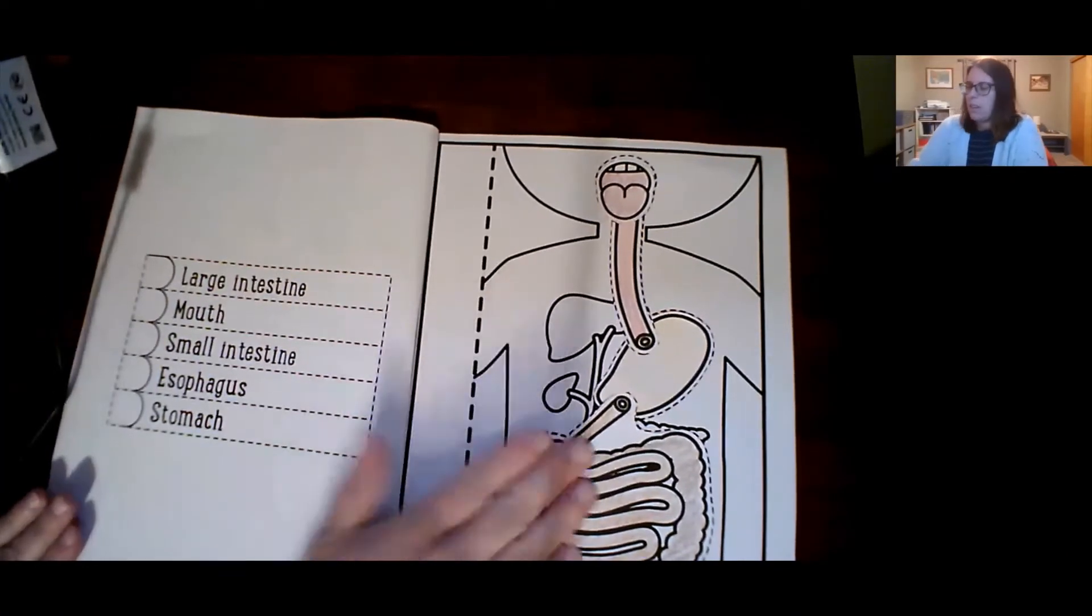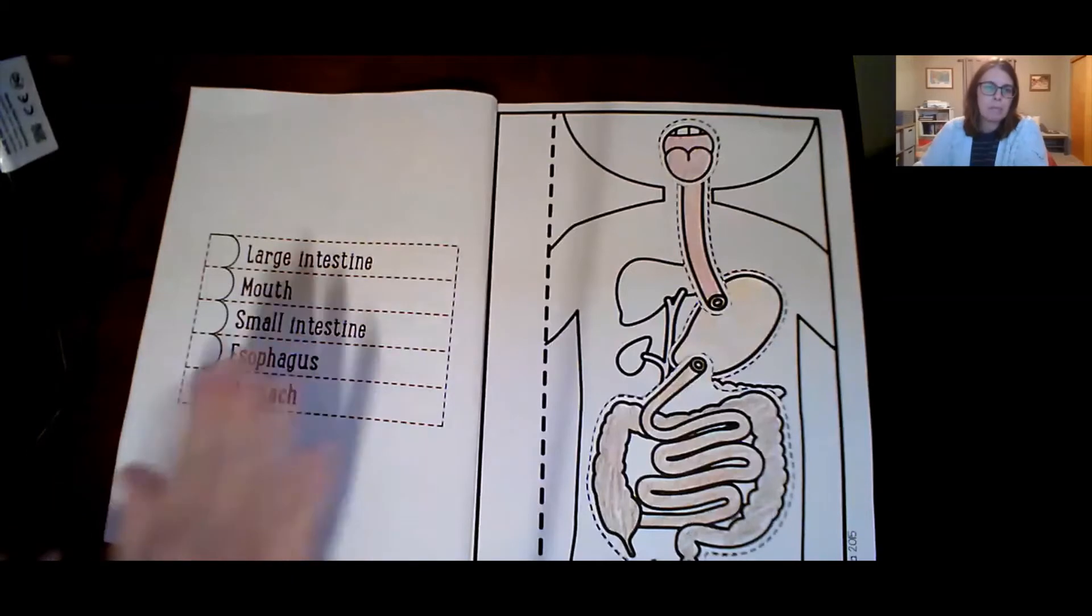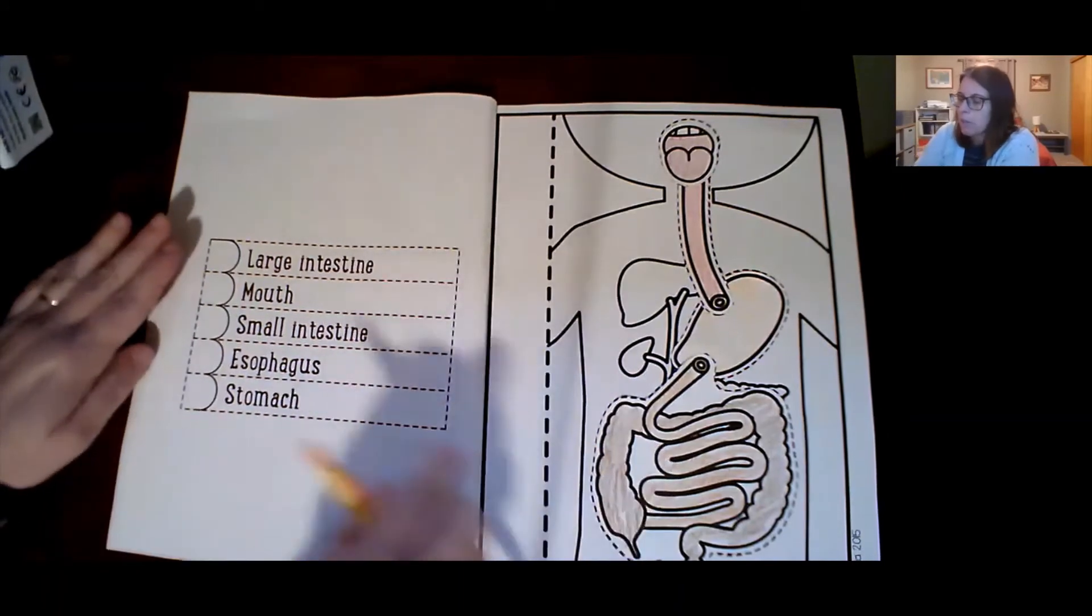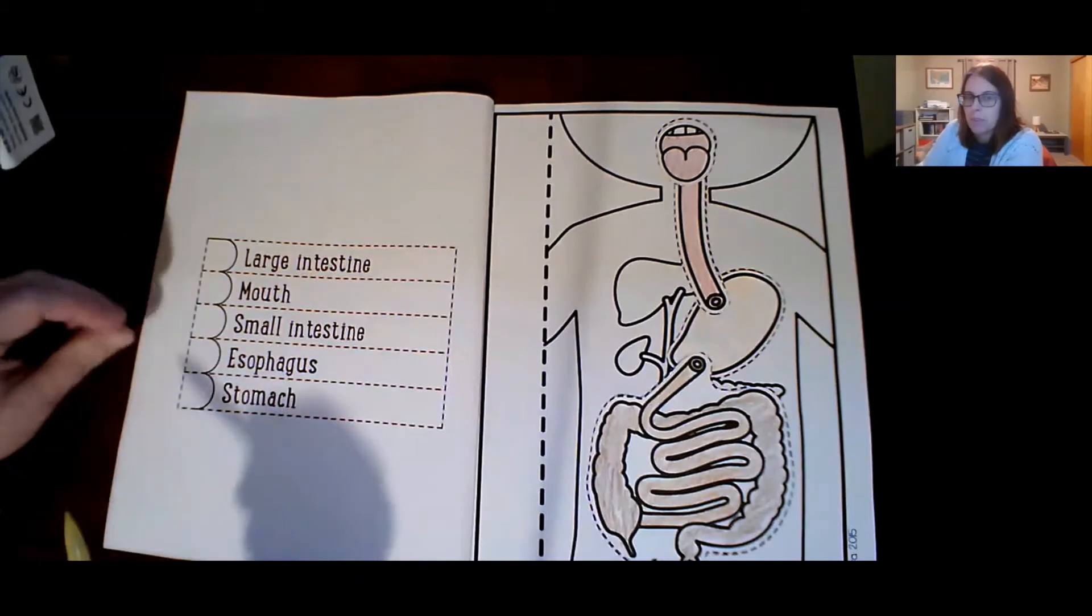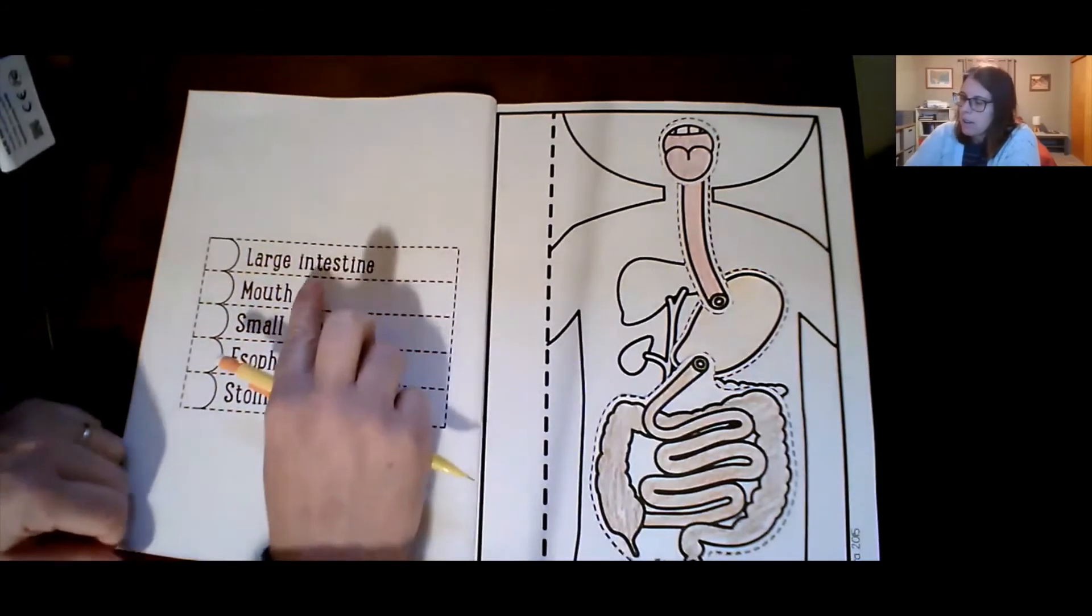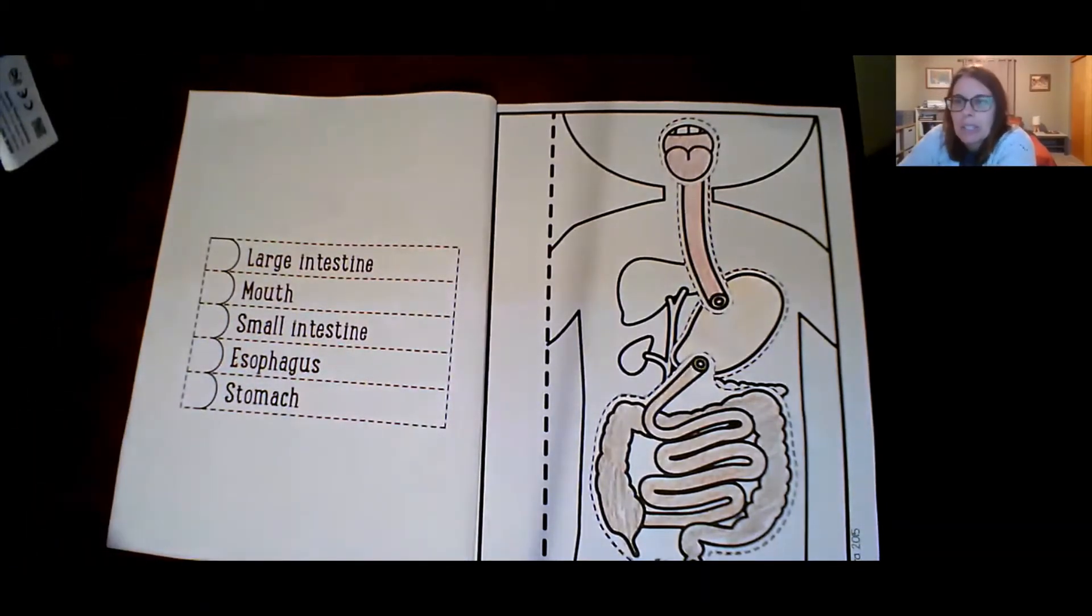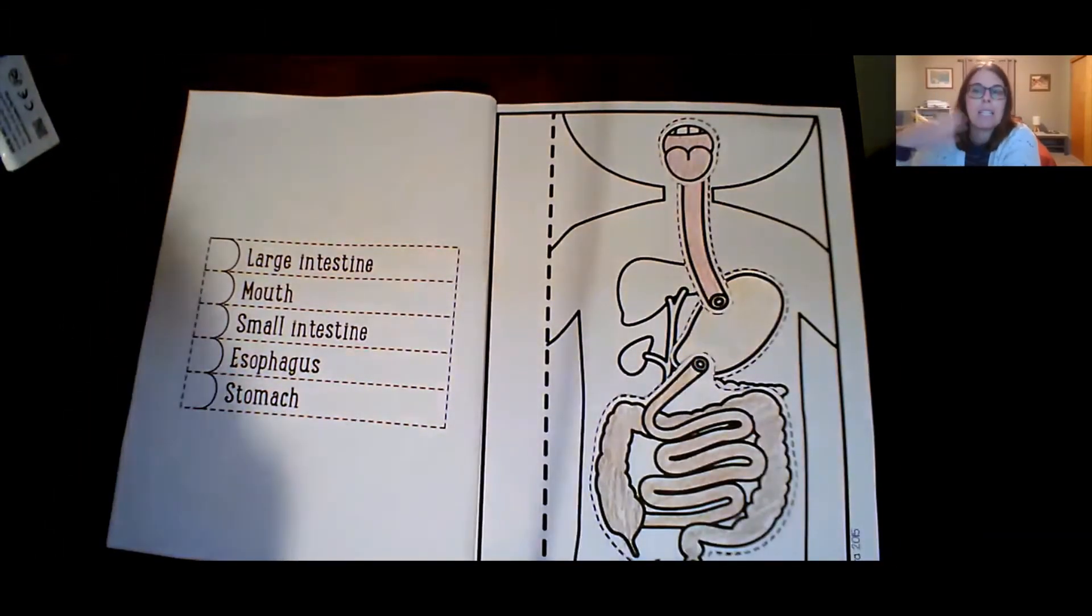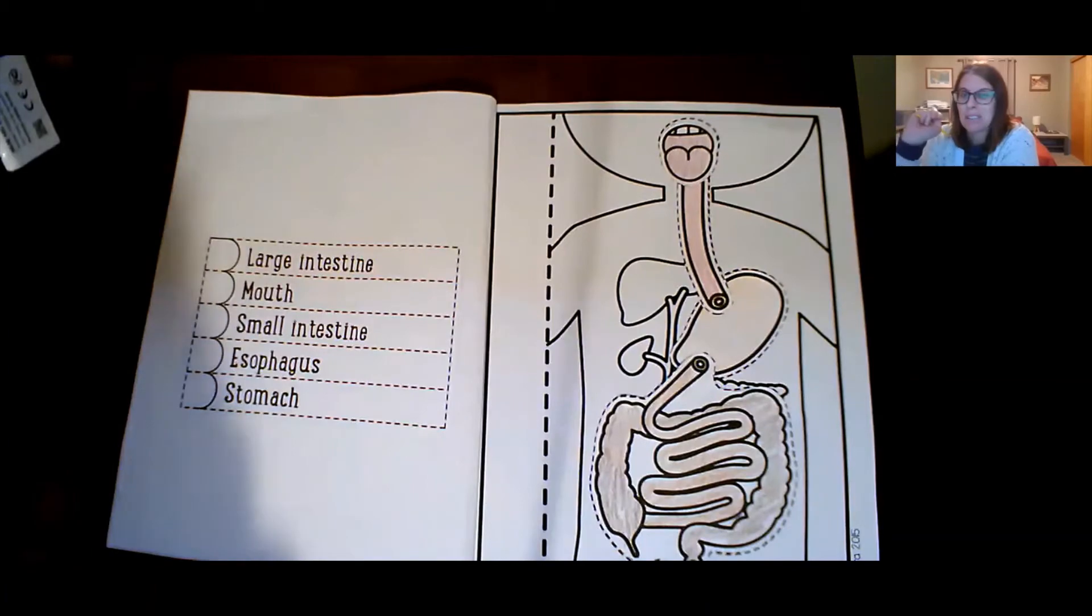Okay. So once you have this page finished, so pause me if you need to, to finish, then we'll move over to this page. Now we're going to need a pencil. So you'll need a pencil or something to write with. And we're going to label these with numbers in the order that food goes through them. So we have the large intestine, mouth, small intestine, esophagus, and stomach. Which of those is the first thing in the process of digestion, digesting food? Which of those is the first thing that the food enters? And we'll put a number one by that. So what is it? What's this part?